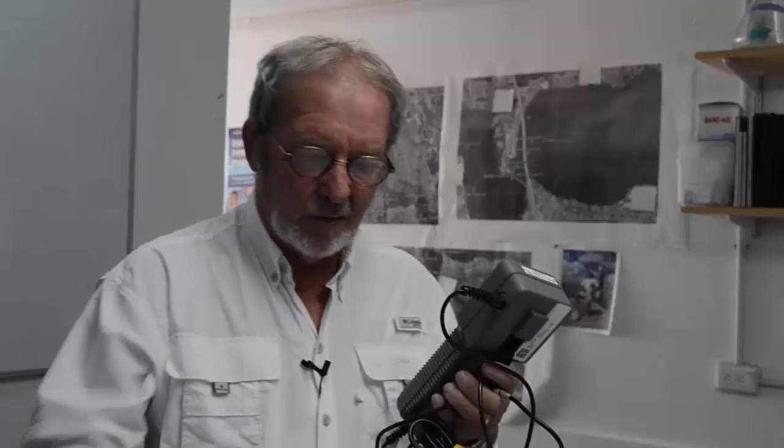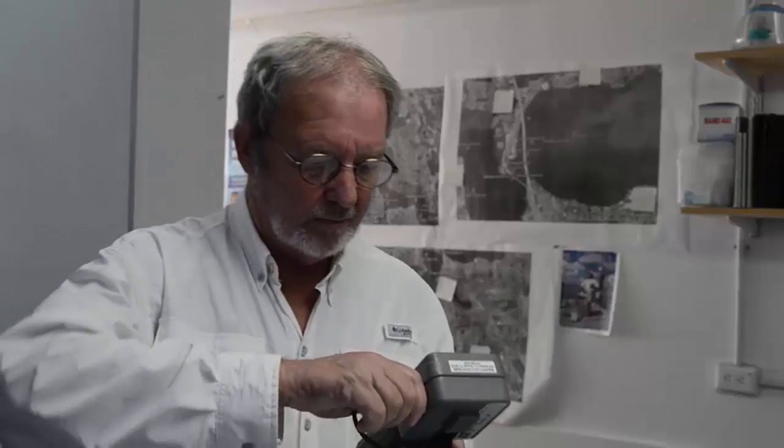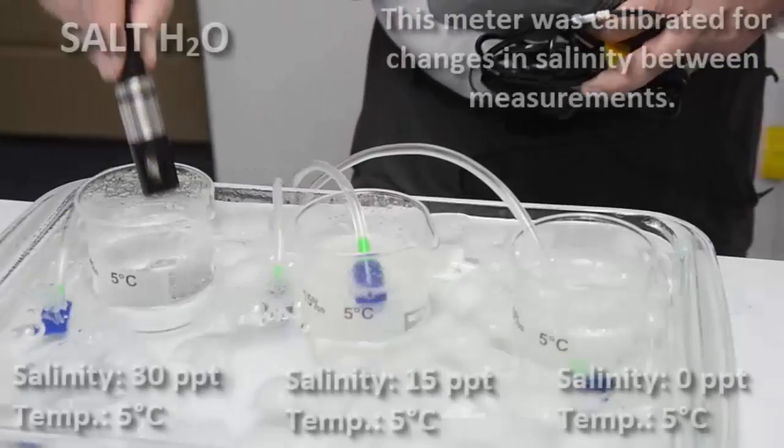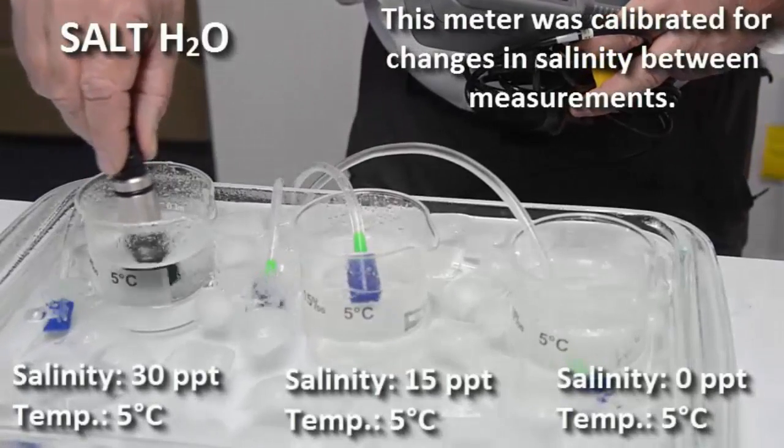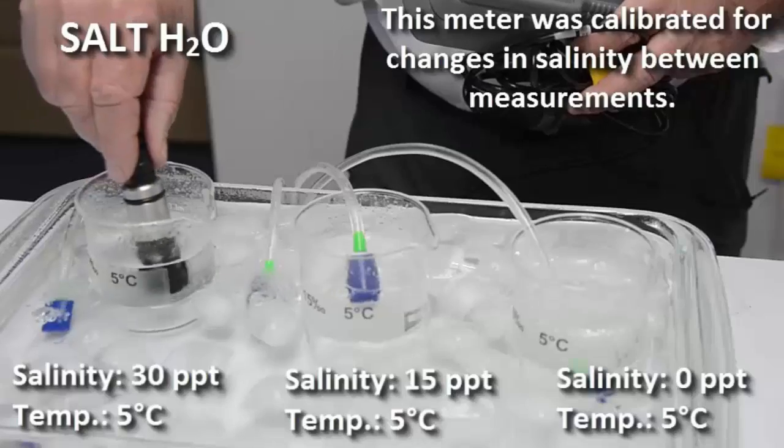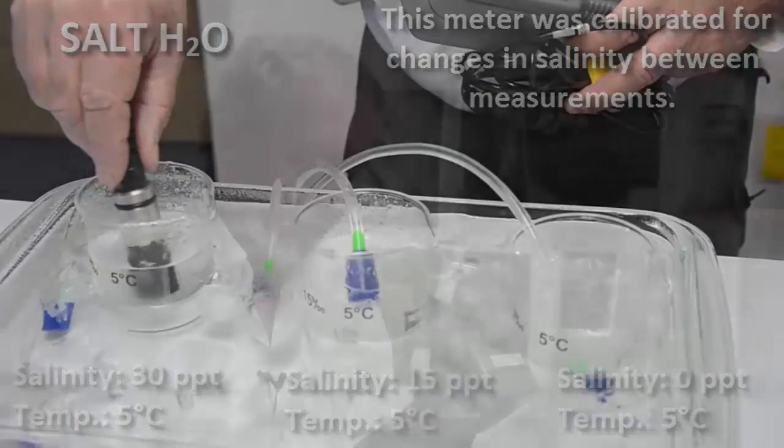Okay now we're going to look at full strength seawater or 30 parts per thousand salinity and a cold bath of five degrees centigrade. So now we've already done fresh water at five degrees centigrade. Now we're doing salt water at five degrees centigrade. 10.5.